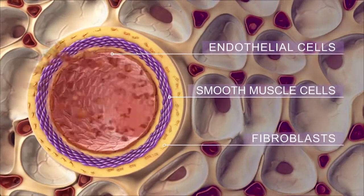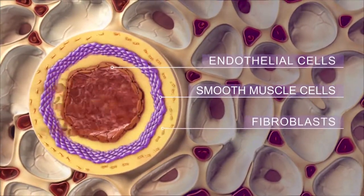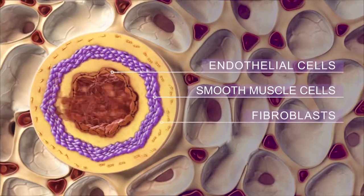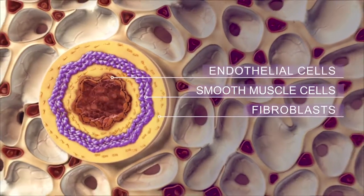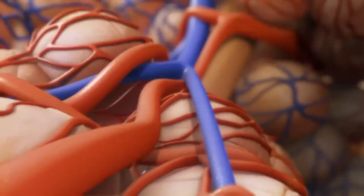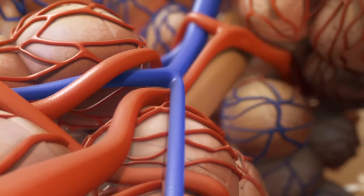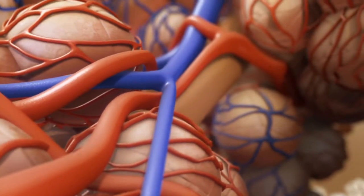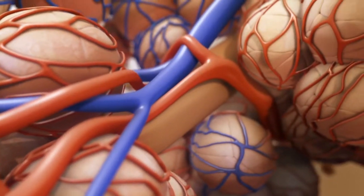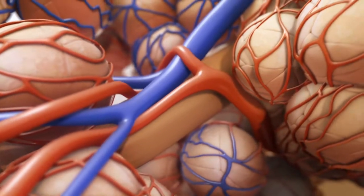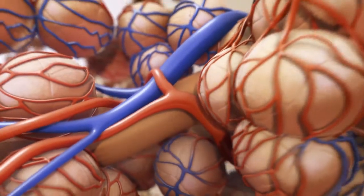Fibrosis causing vascular stiffness occurs due to an increase in extracellular matrix production. Pulmonary vascular proliferation and remodeling determine an increase in pulmonary vascular resistance, or PVR, and arterial pressure.